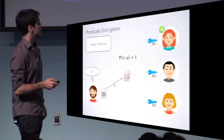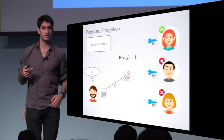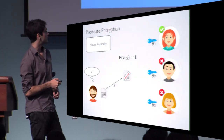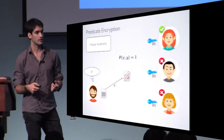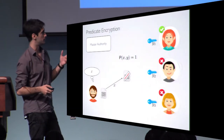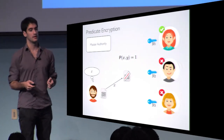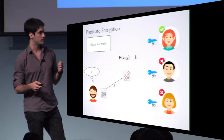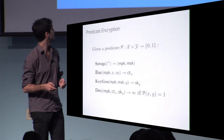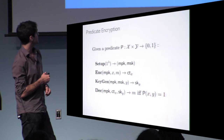For example, only the first user might be able to decrypt. A very important requirement for predicate encryption is collision resistance. We want to avoid two users who individually cannot decrypt from combining their keys to be able to decrypt. In general, no matter how many keys you have, if none of them can individually decrypt the ciphertext, you should not be able to decrypt.